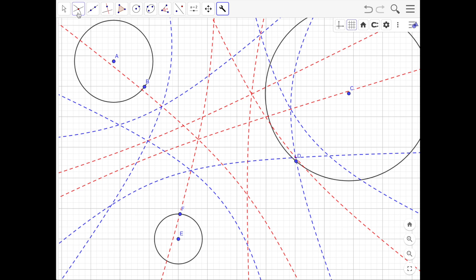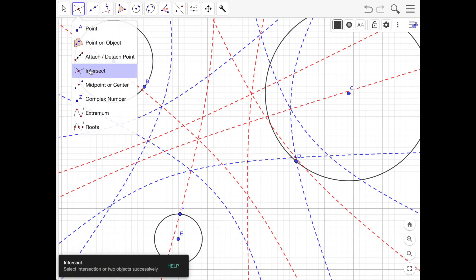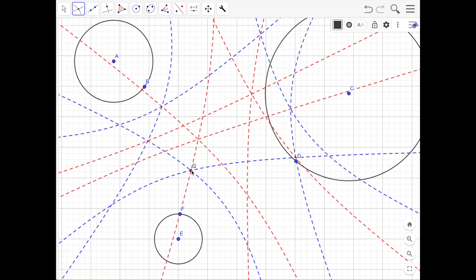So let's choose one. We'll use the intersect tool, and let's just choose this one here. And great. So that is a center of a tangent circle that's tangent to all three of the circles.